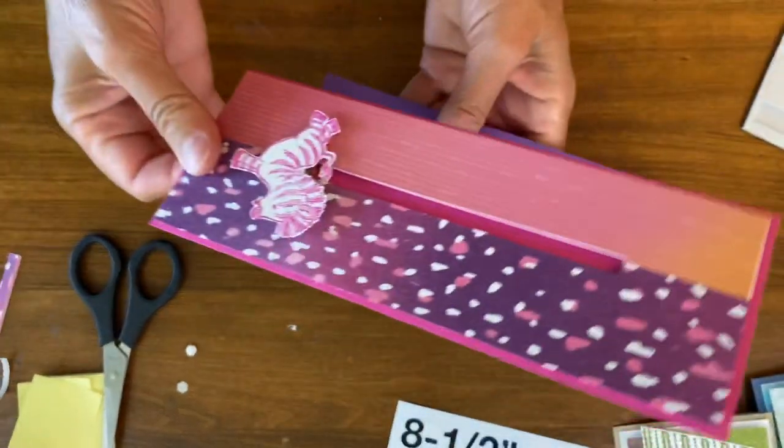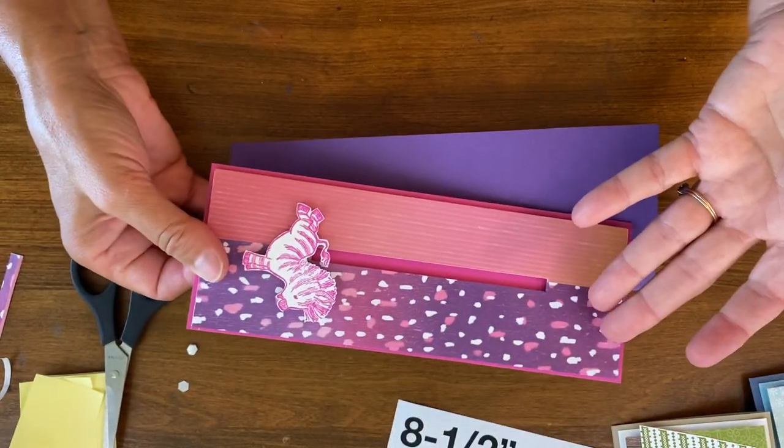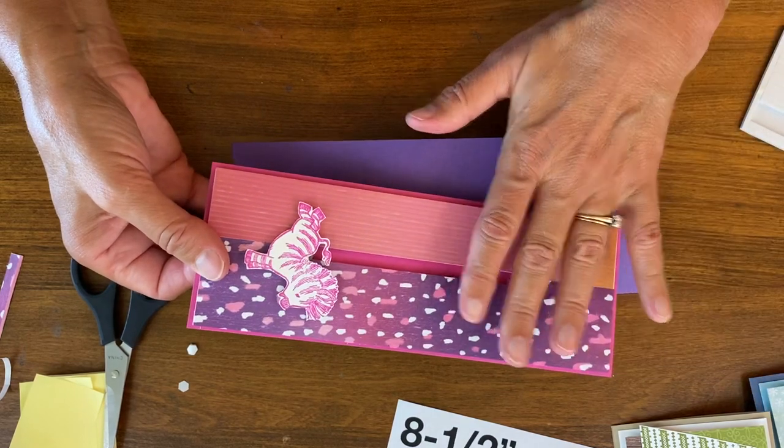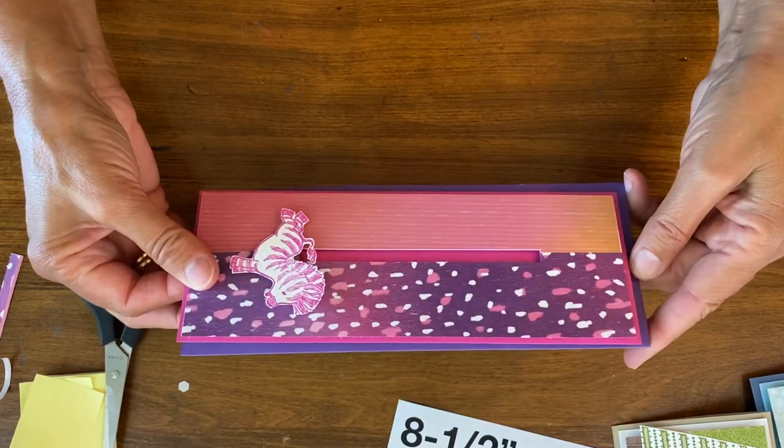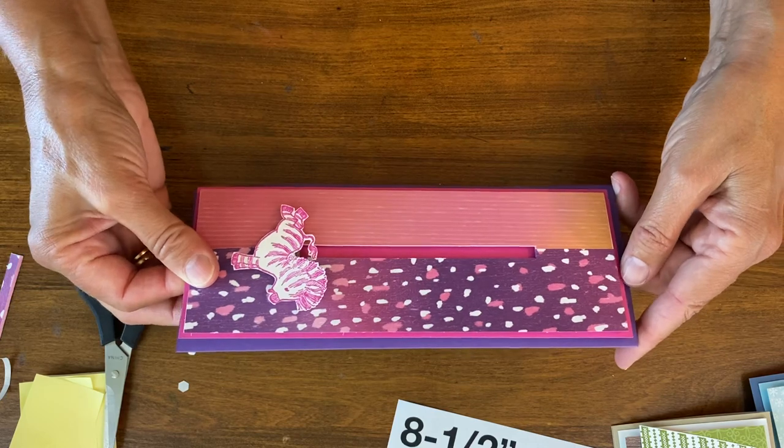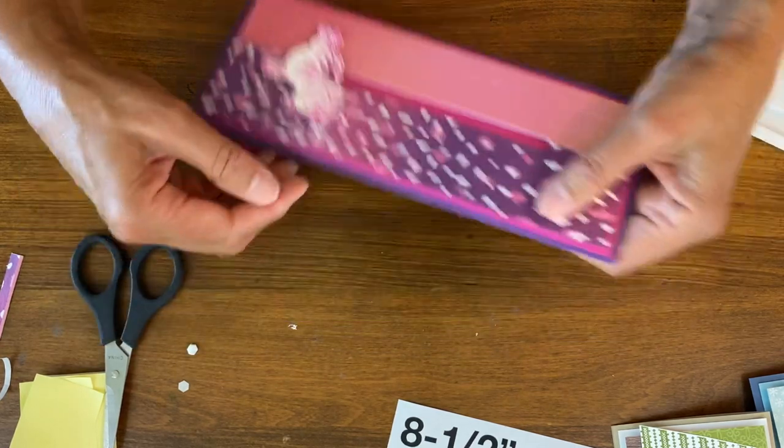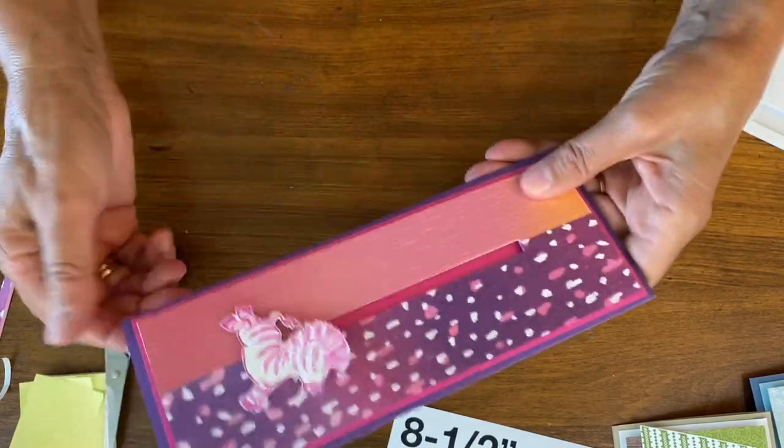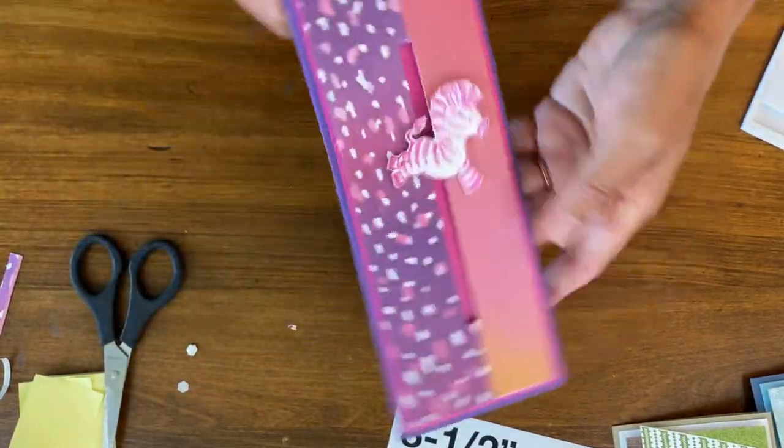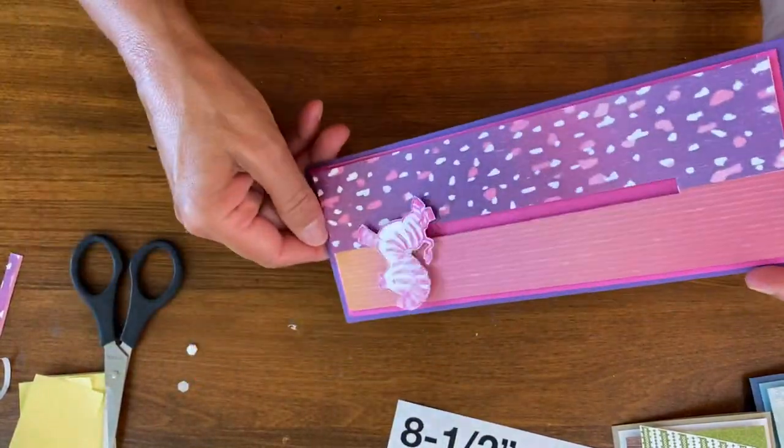And on my base card, I'm going to use gorgeous grape and I'm just pulling colors. People always say, how do you choose colors? I'm just pulling them right out of the designer series paper. This is gorgeous grape and that new bright pink. And then I will add some birthday words to this, but have fun.